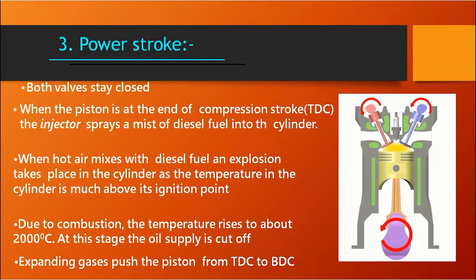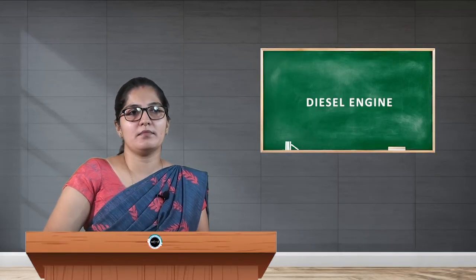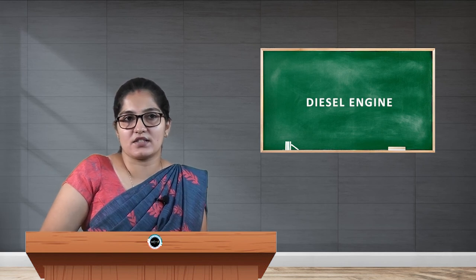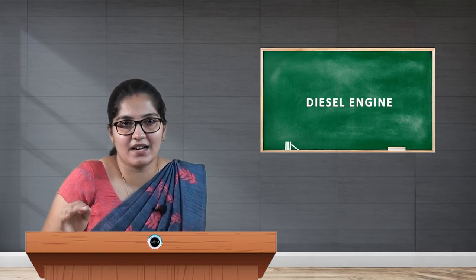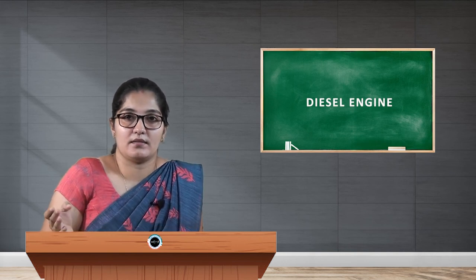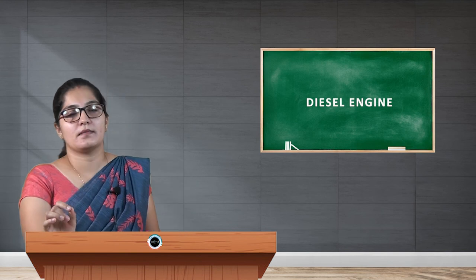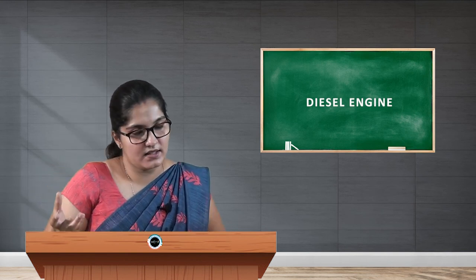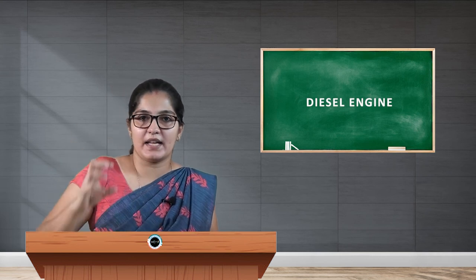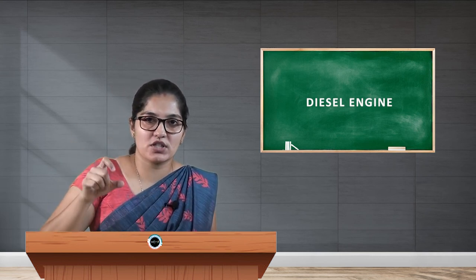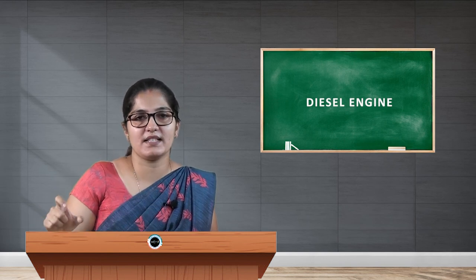During that time, the combustion has already started, and that heat pushes the piston downwards. The piston, which is at top dead center, moves towards BDC, that is bottom dead center. That is called the power stroke. The power stroke is the third stage, which starts at the end of the compression stroke. After spraying the mist of diesel, the chamber catches fire, producing high pressure and temperature, which pushes the piston downwards — that is called the power stroke.